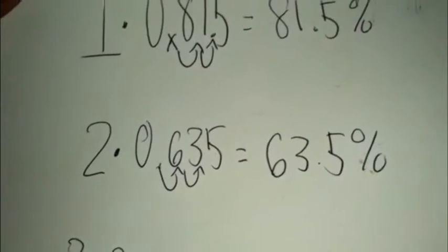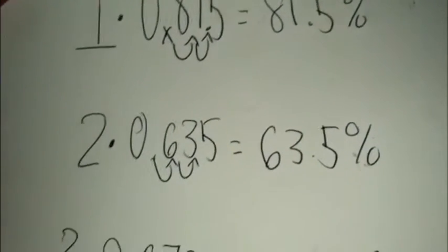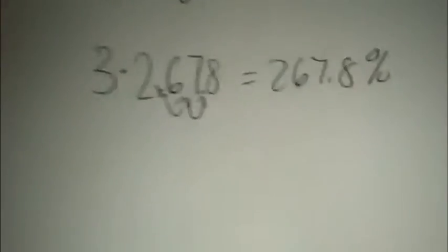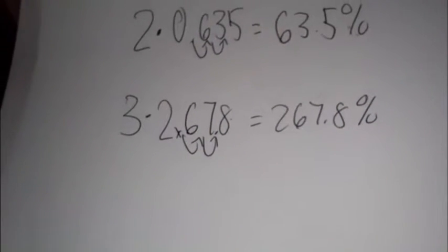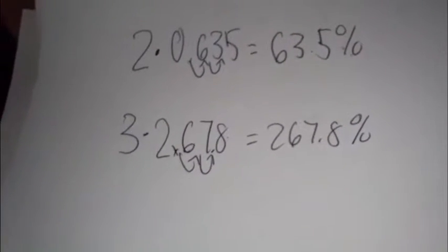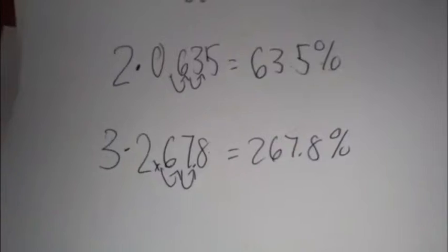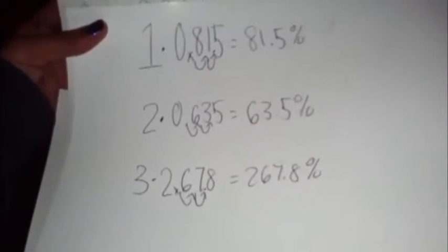0.635 equals 63.5%. Number three: 2.678 equals 267.8%. On all of these problems,